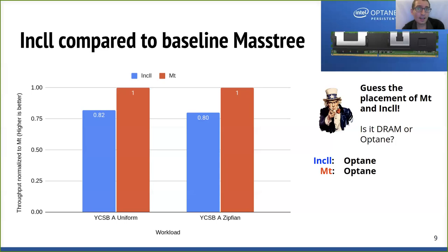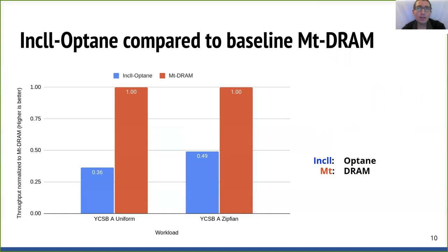After everything is perfect, we could apply the idea across many more data structures and data center applications and deploy it. So are we almost done? As expected, I wouldn't be giving this talk if those two figures were sufficient. But if we ask a simple question—what is the overhead of using in-cache line logging on Optane compared to baseline Masstree running on DRAM?—we get a very different answer. As you can see, the gap is huge and from a runtime performance perspective, almost irreconcilable.